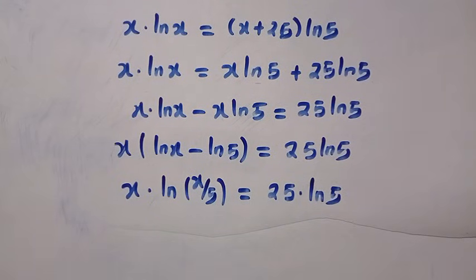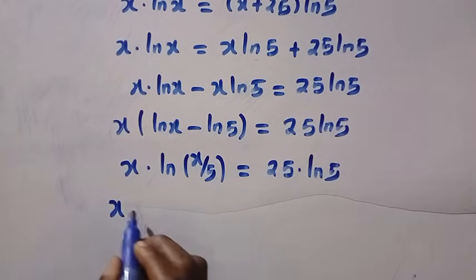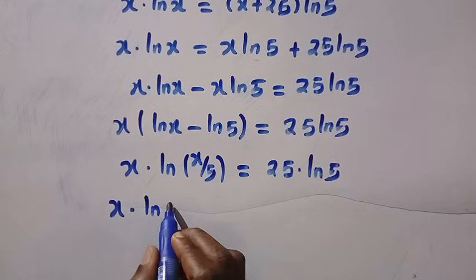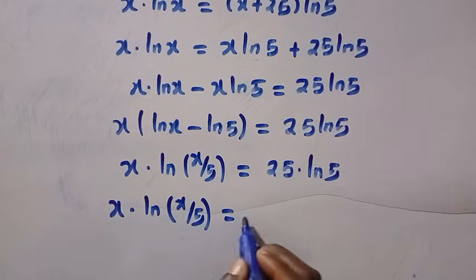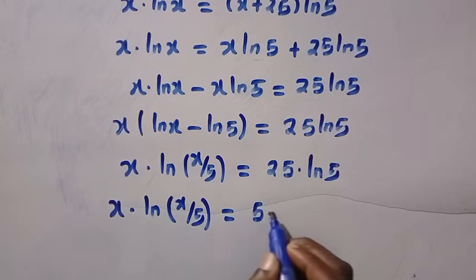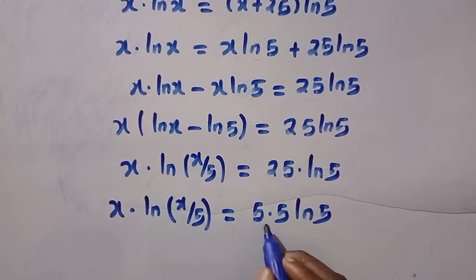And looking at this the next step is we want to do some comparisons. Here is 25. If I write this as x ln x over 5 equals 25 can be written as 5 multiplied by 5 then ln 5. So dividing by 5.